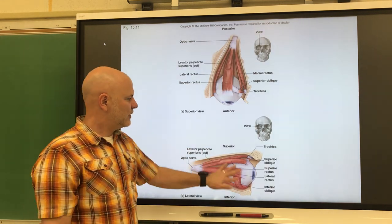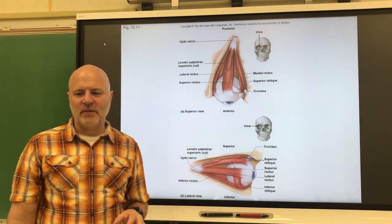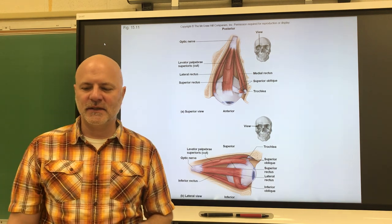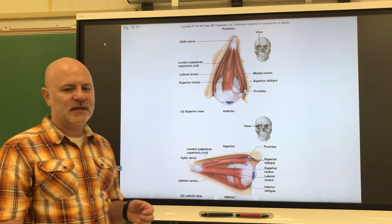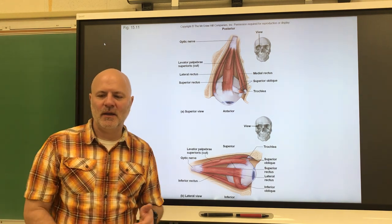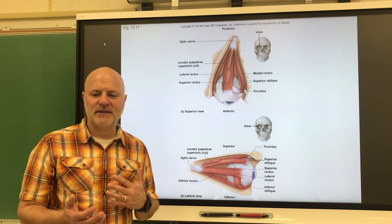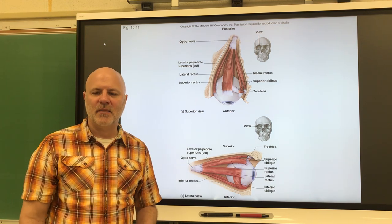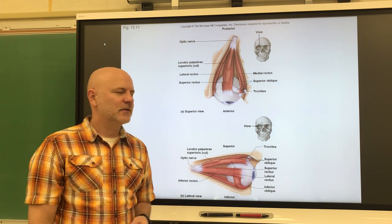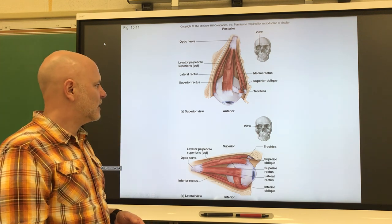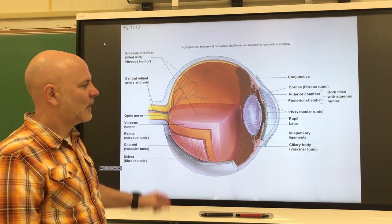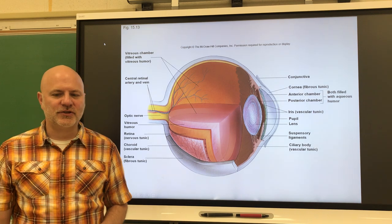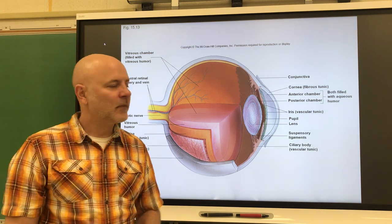Next are the extrinsic eye muscles — there are six muscles that move the eyes. If somebody has diplopia, that is double vision, they will have weakness in certain of those eye muscles, making it hard to focus.